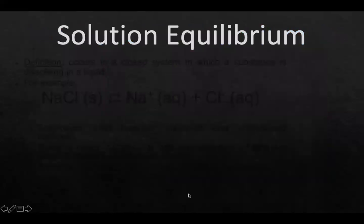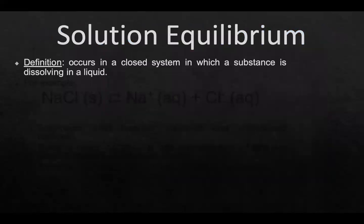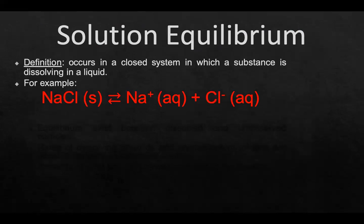Solution equilibrium occurs in a closed system in which a substance is dissolving in a liquid. For instance, we could take salt and break it down in an aqueous solution. What does aqueous solution mean? It means we broke down this solid ionic compound in water. We've separated the ions into a positive sodium ion and a negative chloride ion.